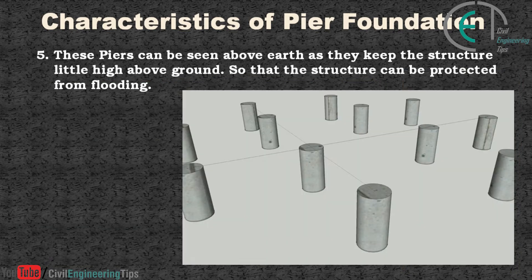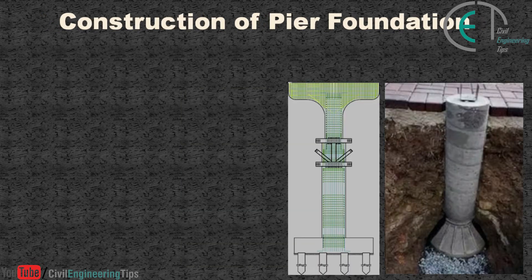These piers can be seen above ground as they keep the structure a little high above the ground, so that the structure can be protected from flooding.